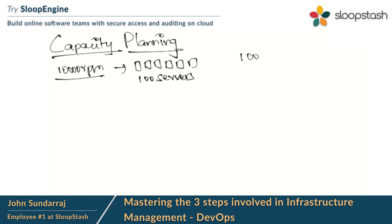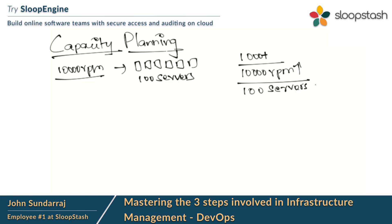Assume that our customer base has increased by 1,000. If the customer base increases, obviously your traffic also increases. Let's assume your production workload increases by 10,000 requests per minute. In that scenario, most people just add servers by doubling them — when the traffic is doubled, they simply double the servers. But this is not the exact way to do capacity planning.